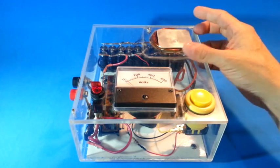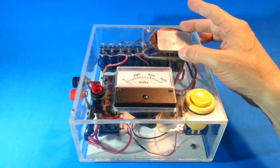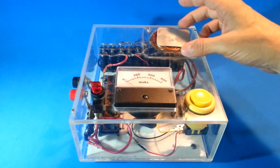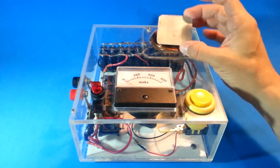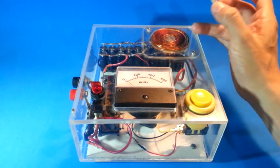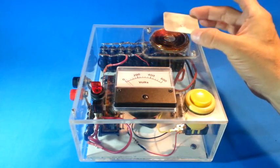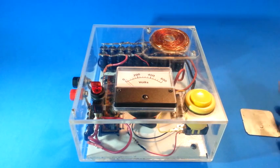Because of Lenz's law, the two fields are opposite; they oppose each other, so there is a repulsion between the plate and the coil. The plate is launched because of the force generated by the opposing magnetic fields. So let's see how it works.